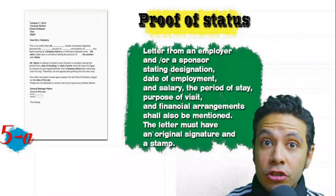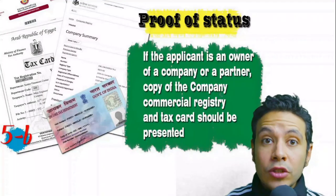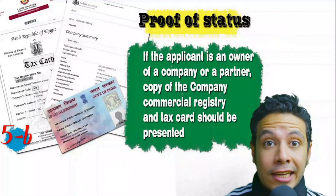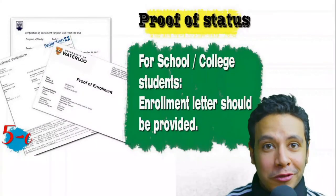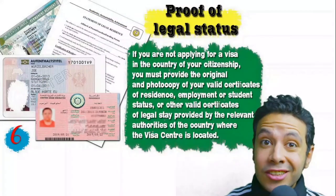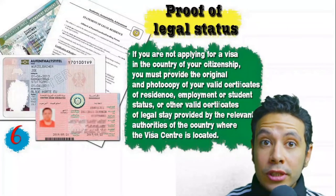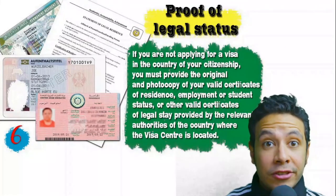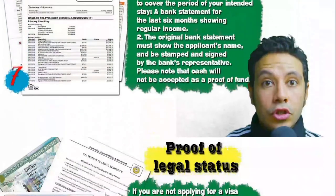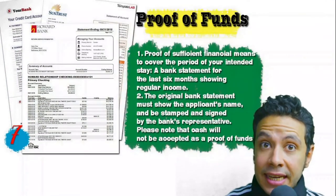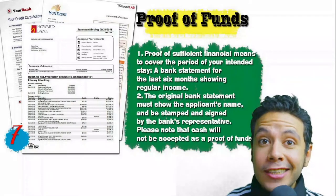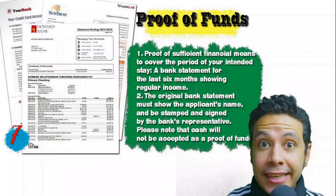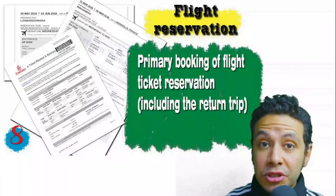If you own your own business, your commercial registry and tax card must be presented. If you are a student, an enrollment letter from your university or school is required. If you are applying from a country different than your own, you need proof of legal residence — a certificate of legal residence, or a valid residence visa. You will also need proof of sufficient funds: a bank statement covering at least six months, showing your name and signed and stamped by bank representatives. Cash will not be accepted as proof of funds.